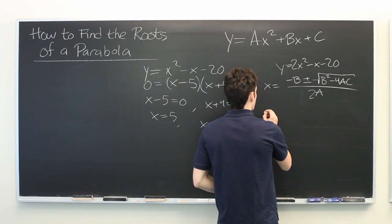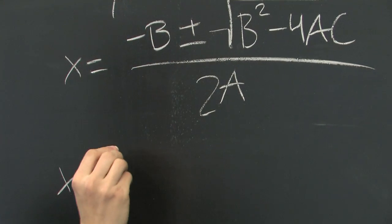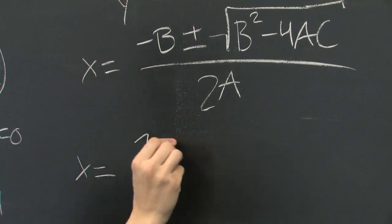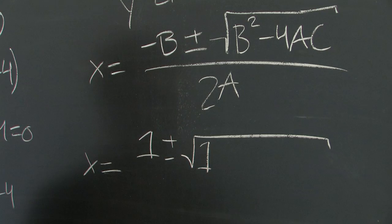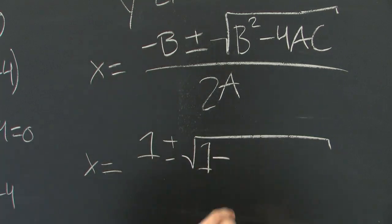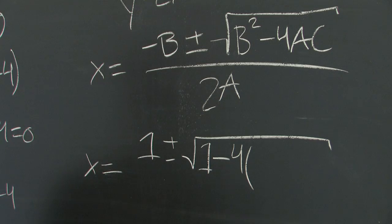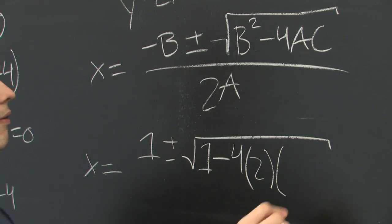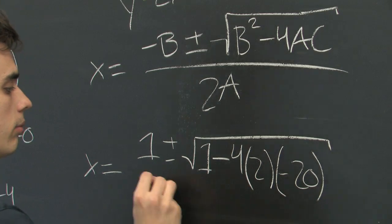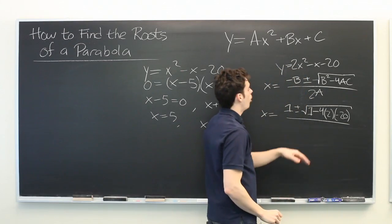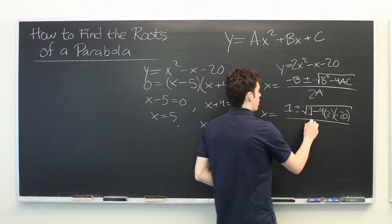Let's start plugging in our numbers and see what we get. B is negative 1, so this becomes 1 plus or minus square root. B squared again is 1, minus 4 times a is 2, and c is negative 20. All this over 2a. A is 2, so the denominator is 4.